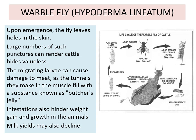Here you can see the life cycle of warble fly on the cattle. The fly lays the eggs on the hind leg. Then the eggs penetrate into the skin as larva. The larvae feed upon the connective tissue and meat of the cattle, which reduces the growth of the cattle as well as milk yield. Then they change into the pupal stage and the adult emerges.